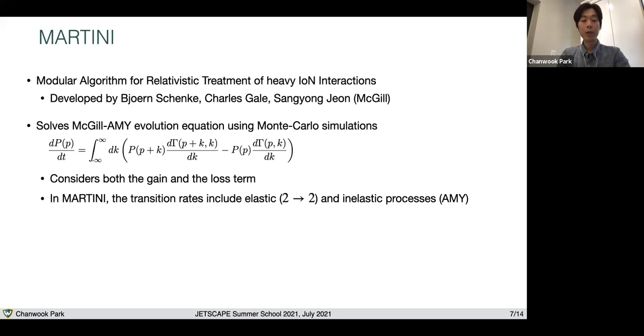Now let me move on to the second energy loss in low virtuality phase, which is Martini. Martini is a modular algorithm for relativistic treatment of heavy-ion interactions developed by Bjorn, Charles, and Sangyong at McGill University. Basically, Martini solves this following McGill-AMY evolution equation using Monte Carlo simulations.